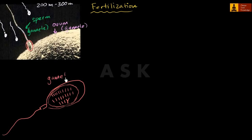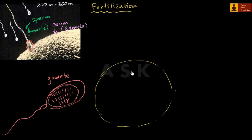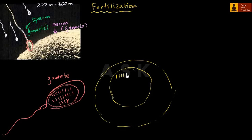This gamete is going to fuse with the egg, the ovum that your mother is contributing. So this is the egg, and let me draw its nucleus. Your mother is also going to contribute 23 chromosomes: 1, 2, 3, 4, 5, 6, 7, 8, 9, 10, 11, 12, 13, 14, 15, 16, 17, 18, 19, 20, 21, 22. And then she will contribute an X chromosome for the sex-determining.